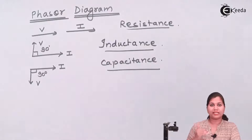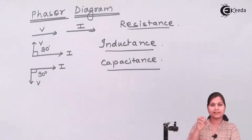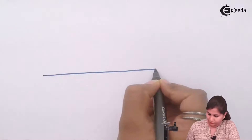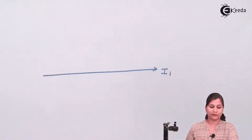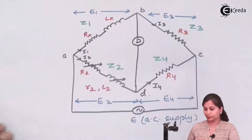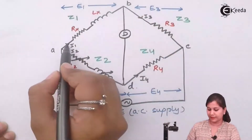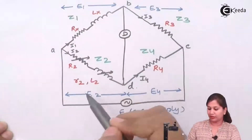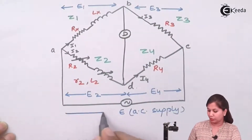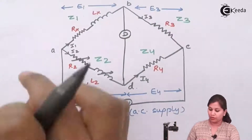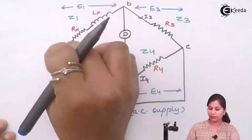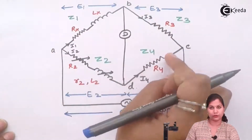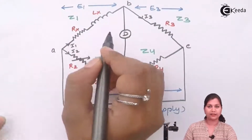To draw the phasor diagram, first we take a reference phasor, and all other phasors are drawn with respect to that reference phasor. We will use the current I1 as our reference phasor. The current flowing in each arm is represented as I1, I2, I3, and I4, and the voltage drop across each arm is E1, E2, E3, and E4. E is the total voltage.